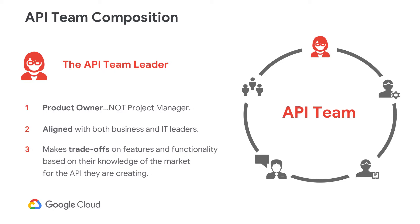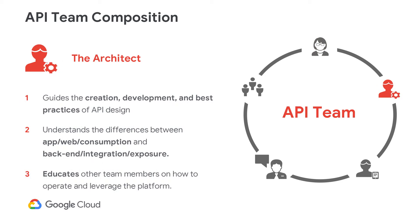The architect is critical to the API team. Not only do they bridge the gap between the API team leader and the API developers, they also establish and enforce API best practices and keep a common design cadence. Their approach to API design is consumer focused, and they educate the wider API team on how to leverage the API platform. In summary, they're part designer, part teacher, and part enforcer.